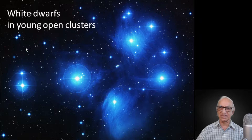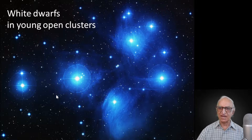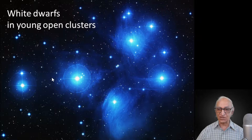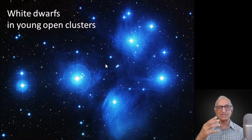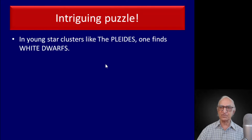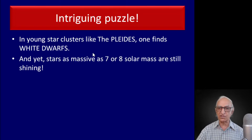Here is the Pleiades cluster — a recently formed young open cluster. These are massive blue stars. What was discovered in the late 1980s and early 1990s are white dwarfs in these open clusters. These clusters have massive stars in them, and they also have low mass stars, but they also have dead stars — white dwarfs. White dwarfs are the end states of stellar evolution.